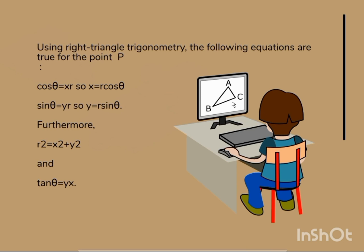Using right triangle trigonometry, the following equations are true for the point P: cos θ = x/r, so x = r cos θ; sin θ = y/r, so y = r sin θ.